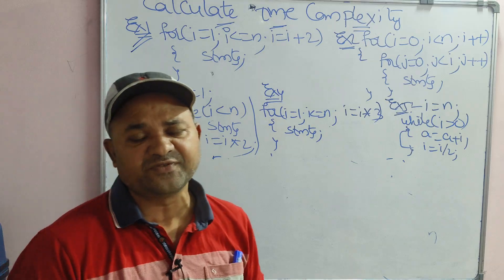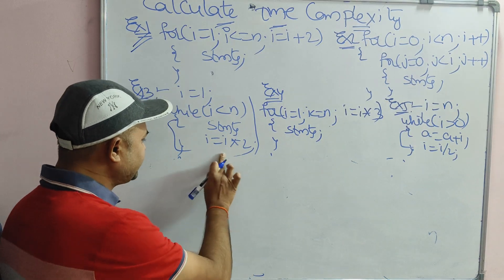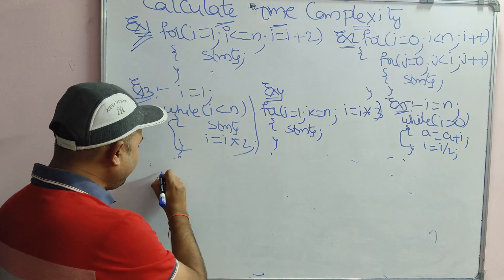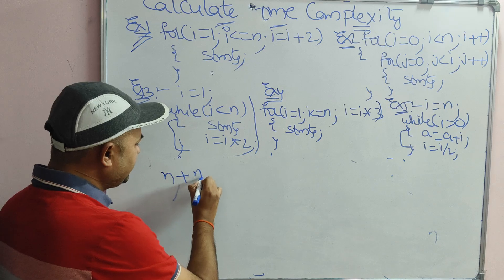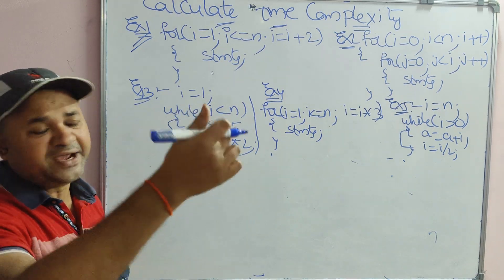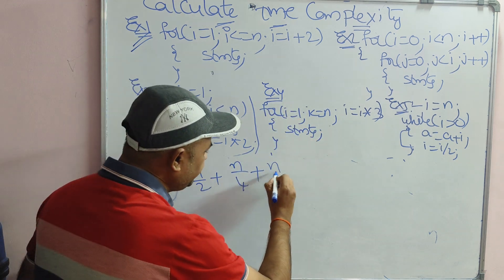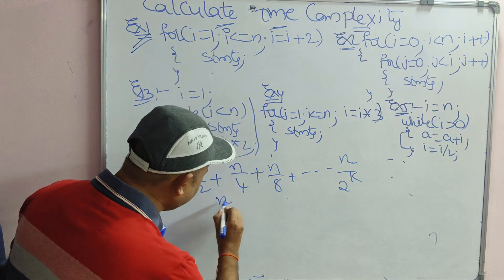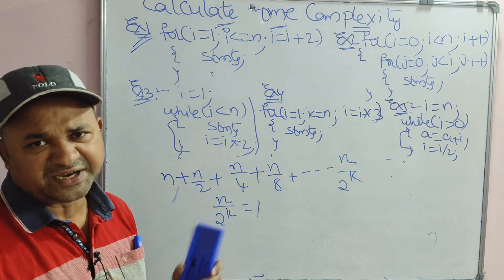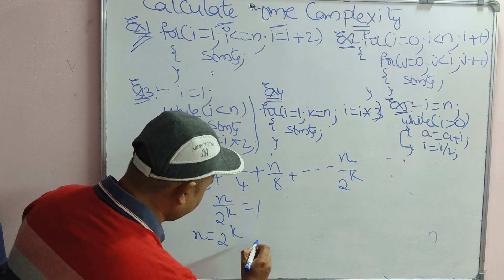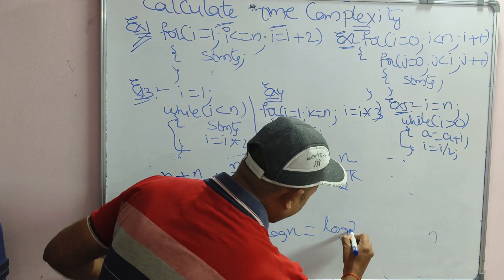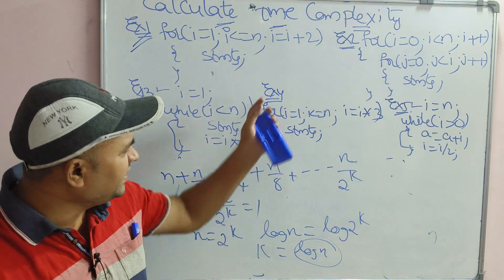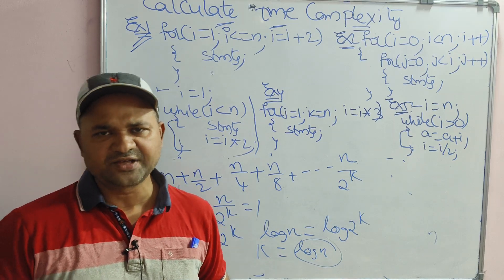The last example has i equal to i by 2, starting with i equal to n. In the first iteration i is n, next n by 2, then n by 4, then n by 8, and so on up to n by 2 power k. We equate the last term to 1 to find the time complexity, giving n equals 2 power k, so log n equals k. The time complexity is log n. In this way, for any program or example, we can easily calculate the time complexity.